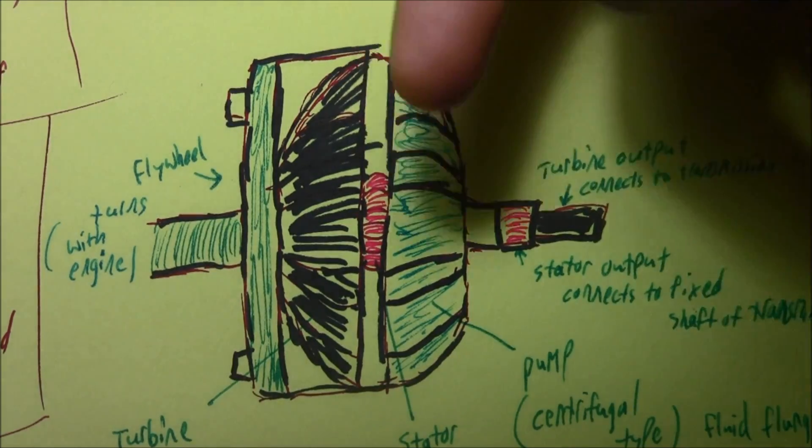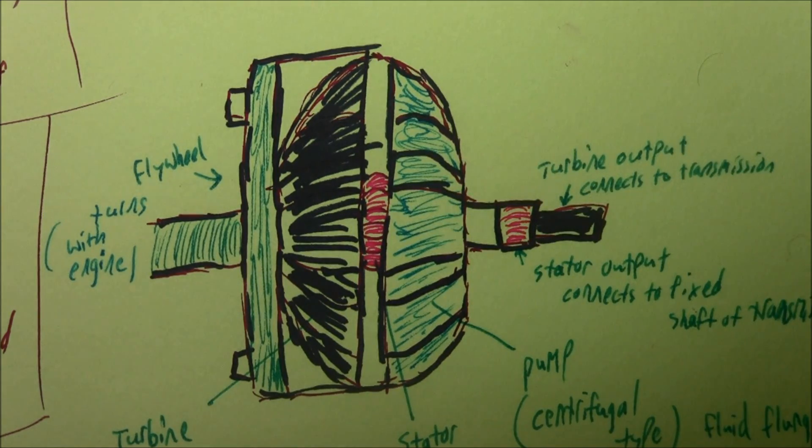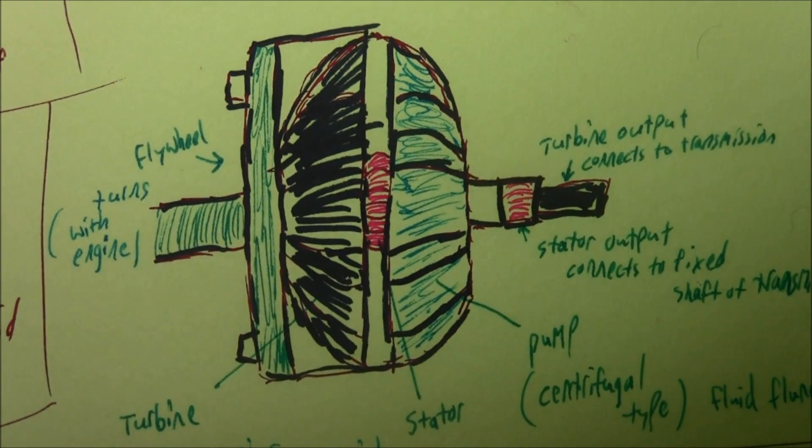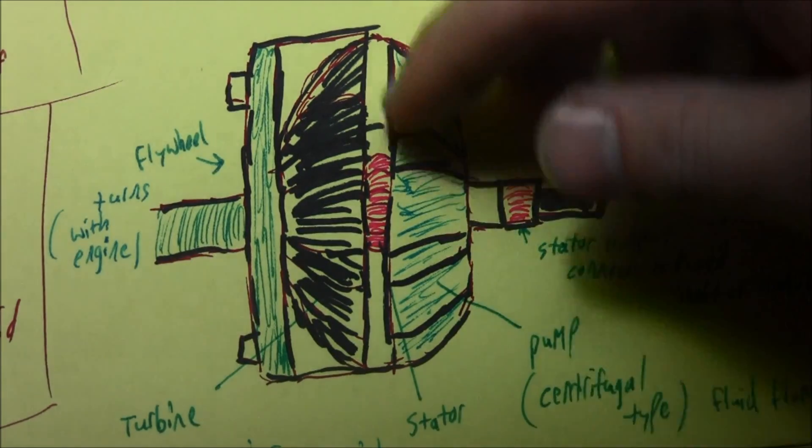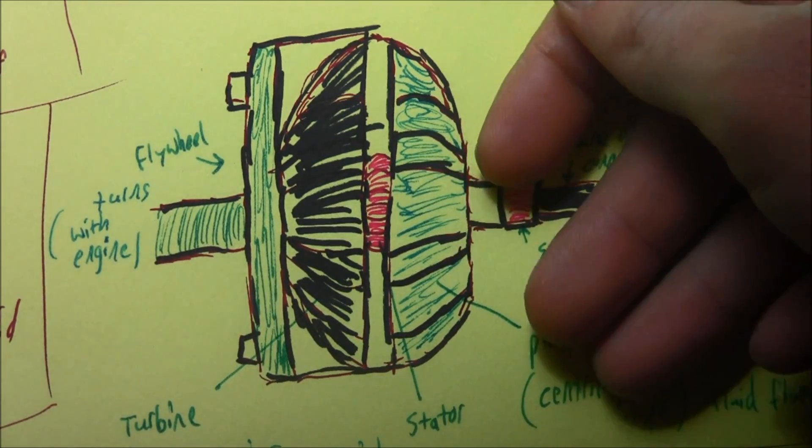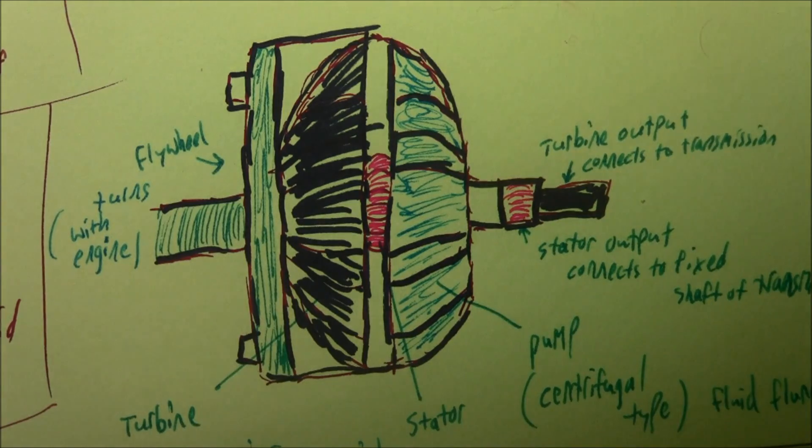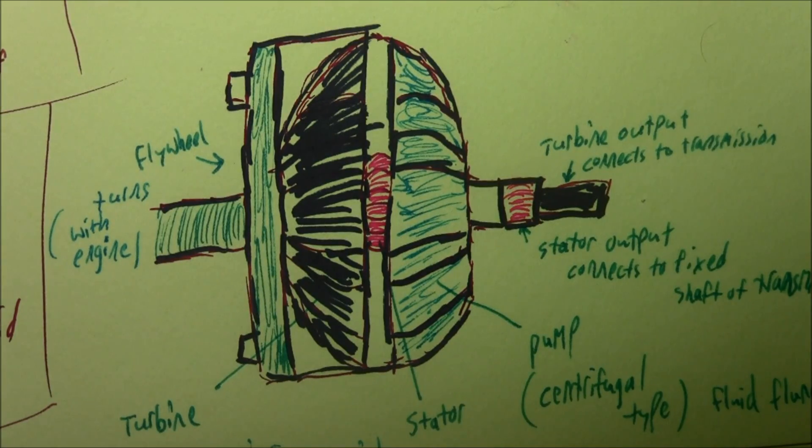The stator almost completely reverses the fluid. It can only spin in the opposite direction of the fluid. There's a one-way clutch in there, and it's pretty tricky the way the clutch operates with the stator. The stator is fixed, hence the word static stator.